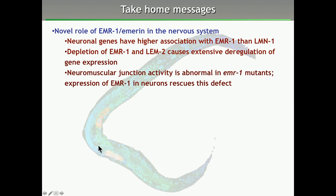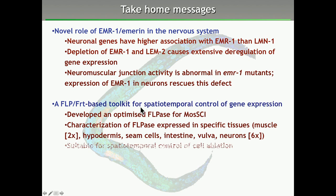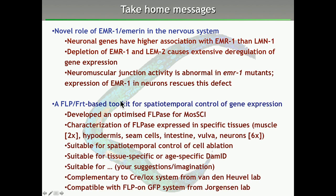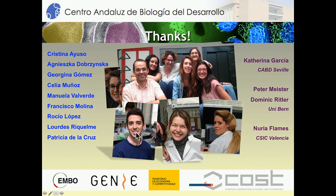In summary, we have shown that neuronal genes are associated with Emerin, and that deletion of Emerin and LEM-2 causes extensive deregulation of gene expression including in the nervous system. We can rescue physiological defects in neurons by expressing Emerin specifically in that tissue. We are developing this FLP-based toolkit, which I think is interesting in the context of spatiotemporal control of gene expression and can be combined with already-published systems from other labs.